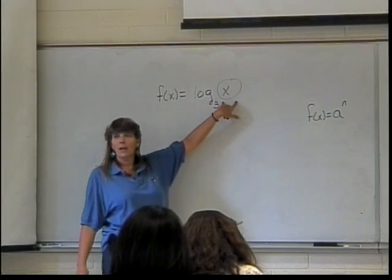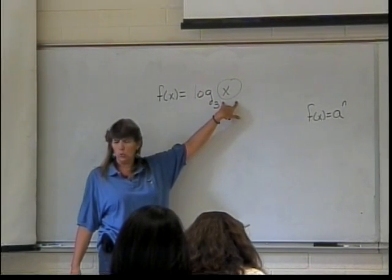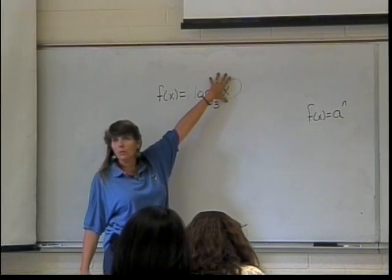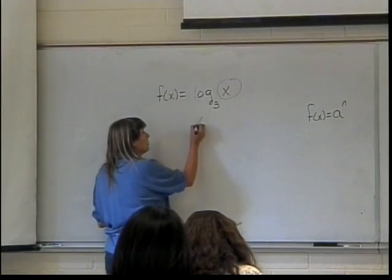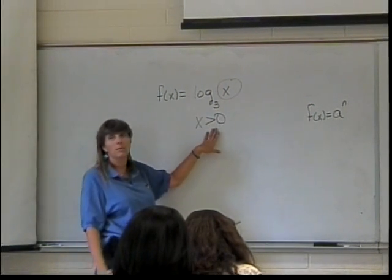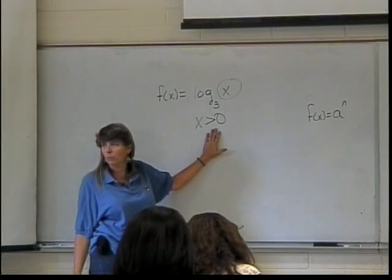So this number could never be zero or negative. It always had to be positive. Well, that's where we get our information about how to find the domain in logarithmic functions. This thing called the argument of the logarithm has to be bigger than zero. So whatever that is, we set it bigger than zero and solve when we're finding the domain.